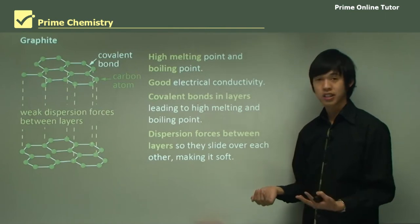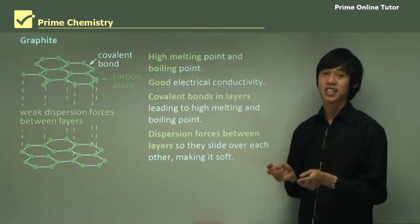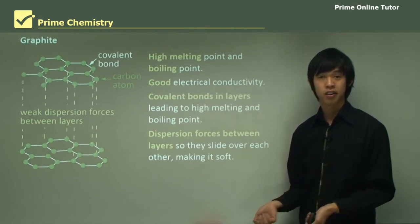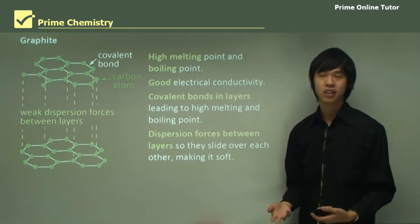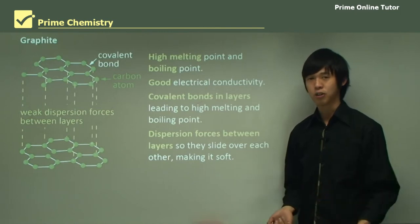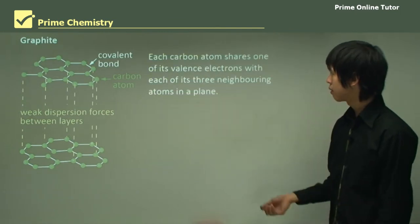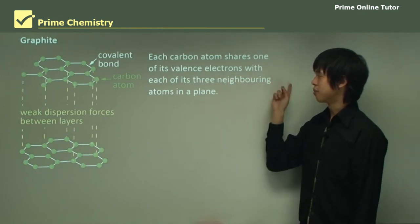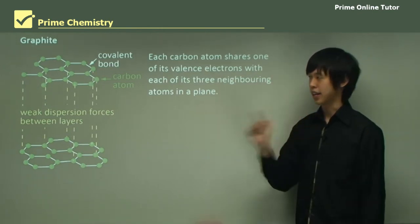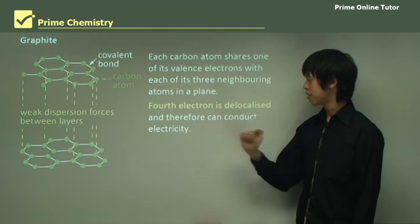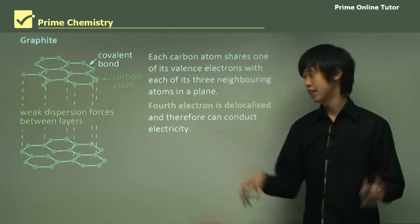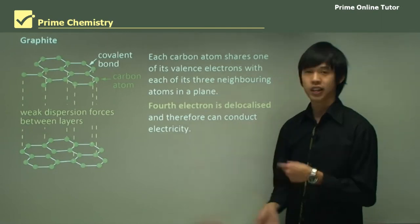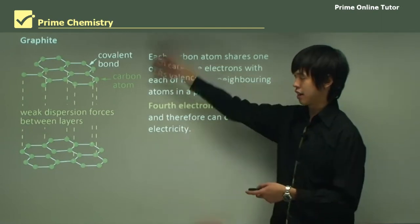It's also used as a lubricant for electrical motors because they can conduct electricity. For those studying physics later on, you'll learn why we use graphite in our electrical motors. Each carbon atom shares one of its valence electrons with each of its three neighboring atoms, like I just mentioned. But the fourth electron is what we call delocalised, which allows it to move freely, which means that it can conduct electricity up and down.